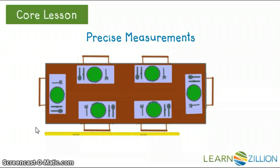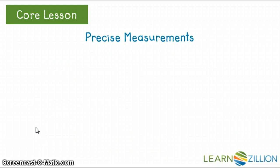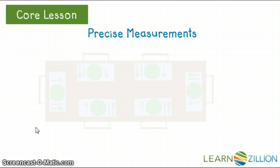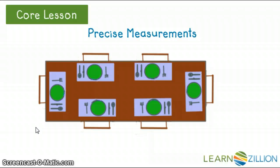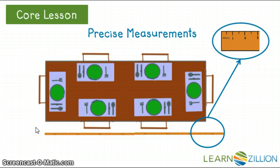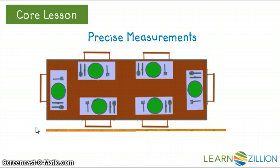Which unit you choose depends on your purpose for measuring. If you want only an estimate, you can measure in larger units. As you can see, this table is less than three yards — that would be a good estimate. If we measured the table in feet, it measures just a little more than seven feet — that would be a good estimate too. But if you want a precise measurement, you would need to measure in the smallest unit that fits the object you're measuring. If we zoom in on the eighth ruler, we can see that the end of the table actually lines up with the three-inch mark on the ruler. So if we add 12 inches for each of the seven rulers, plus three inches on the eighth ruler, we find out that the table is exactly 87 inches long. That is a precise measurement.